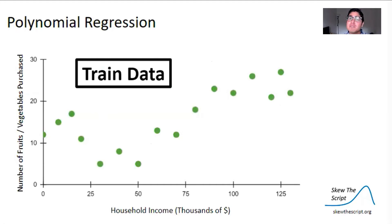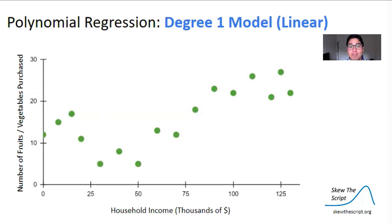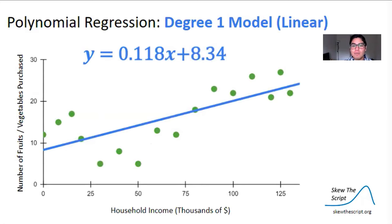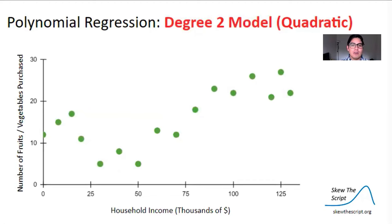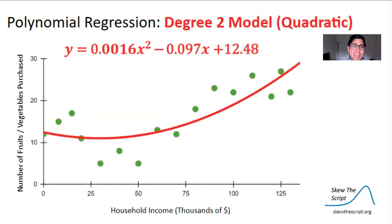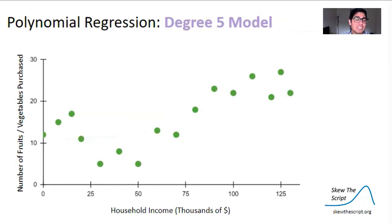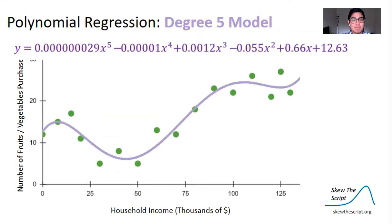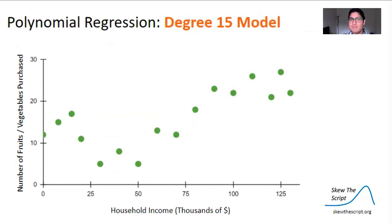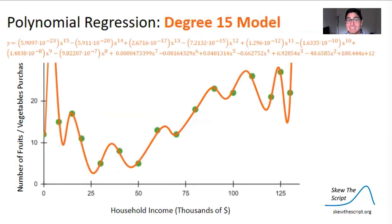Here was our train data. Let's first try a degree-one model — degree one is linear because the largest exponent on x is one. Our model captures a few points, but I think we can do better. Let's try a degree-two model: it looks a little better and more points are captured. We could also do degree three or four, but let's try a degree-five model — that looks good and fits the data fairly well. And just for fun, a degree-15 model almost hits every single data point.